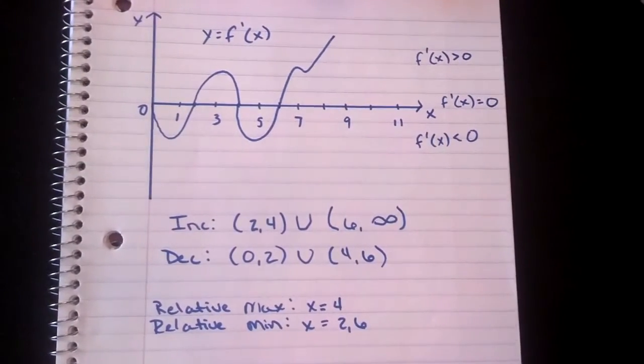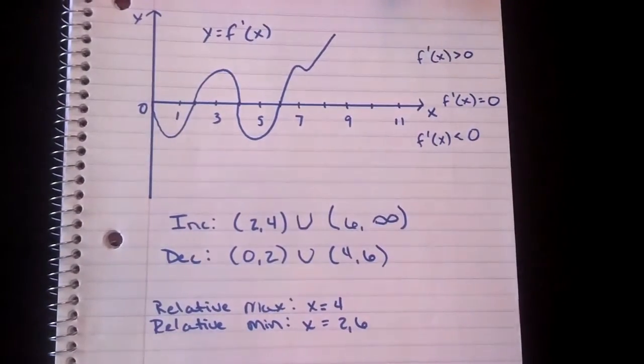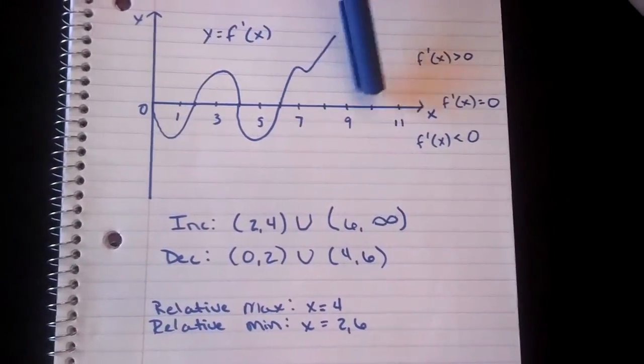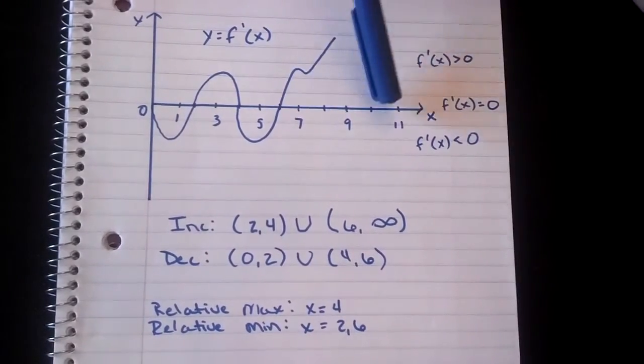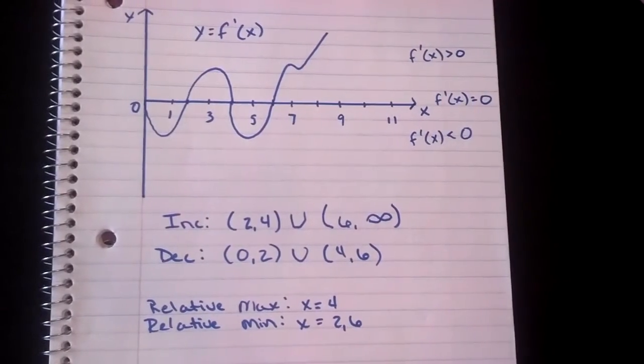The graph that was given was the first derivative of the function. To find the decreasing values, it's any point on the graph that we see below the x-axis, and for increasing, it's any points above the x-axis.